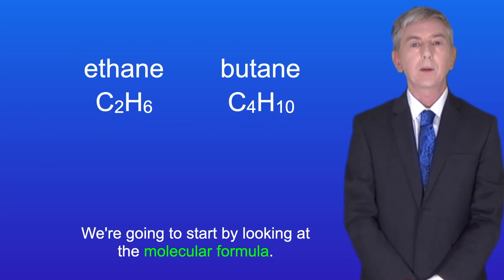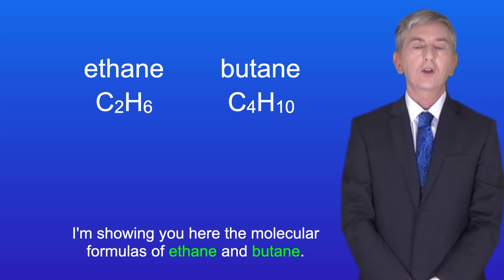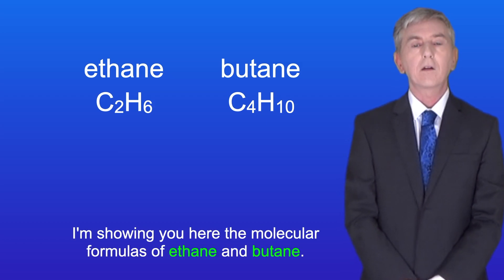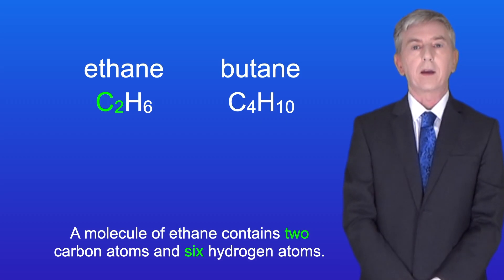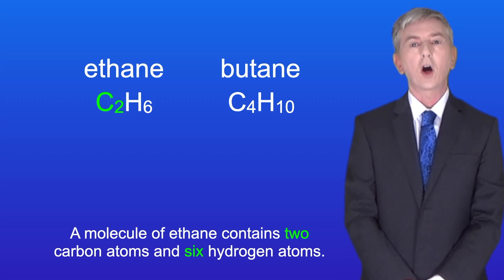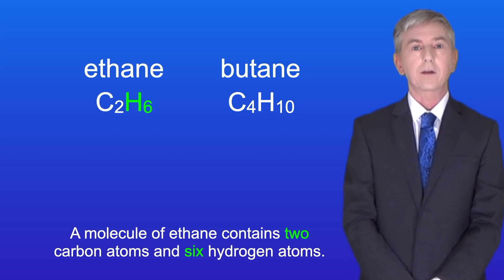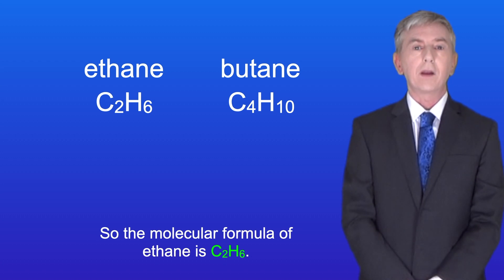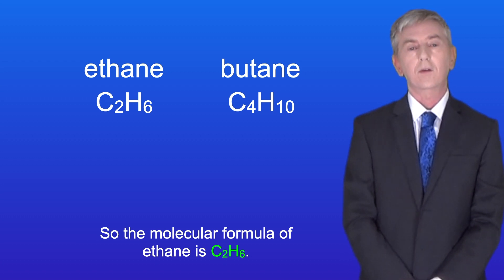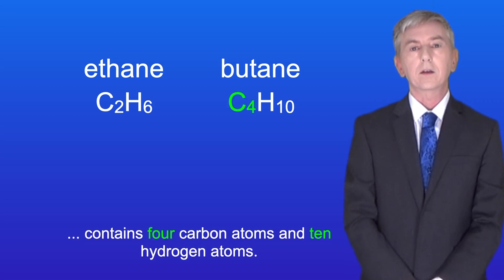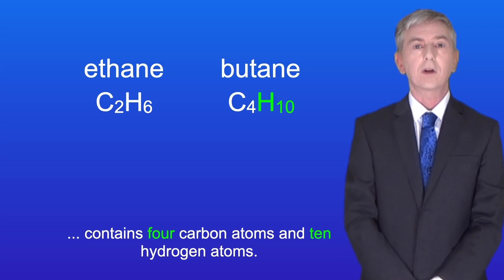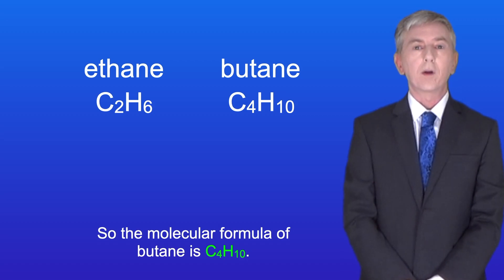We're going to start by looking at the molecular formula. Here are the molecular formulas of ethane and butane. A molecule of ethane contains two carbon atoms and six hydrogen atoms, so the molecular formula of ethane is C2H6. In contrast, a molecule of butane contains four carbon atoms and 10 hydrogen atoms, so the molecular formula of butane is C4H10.